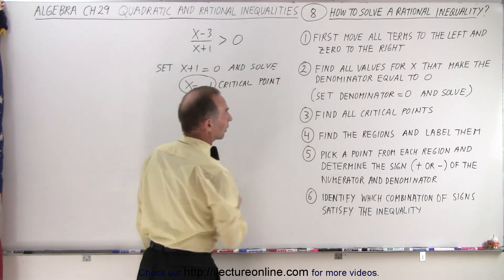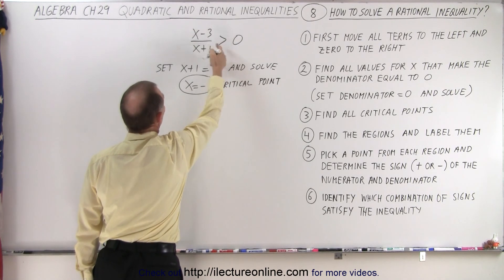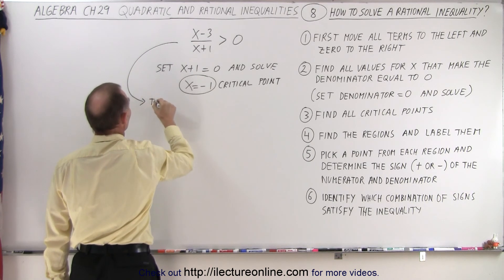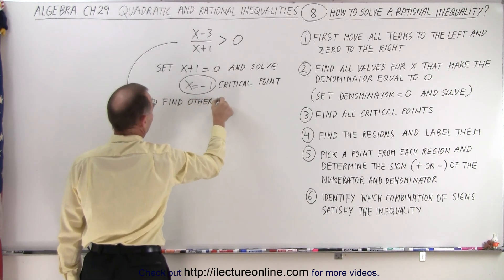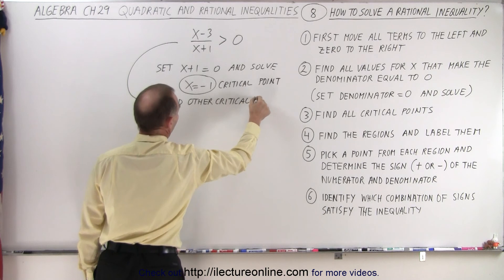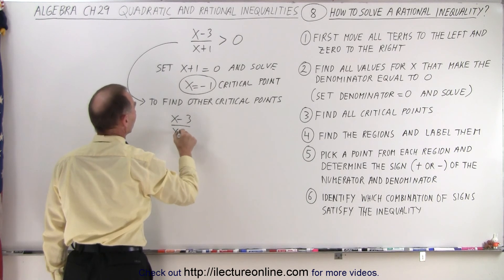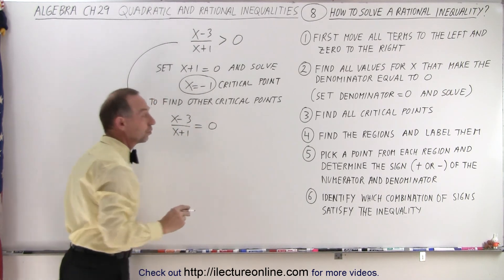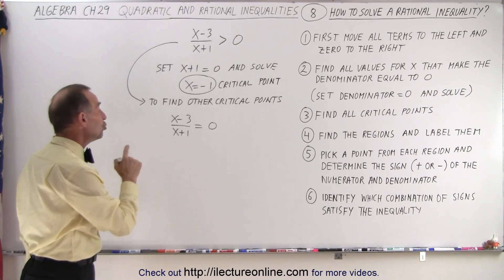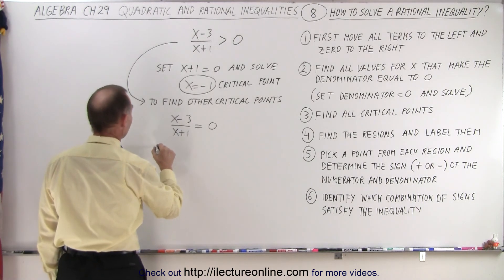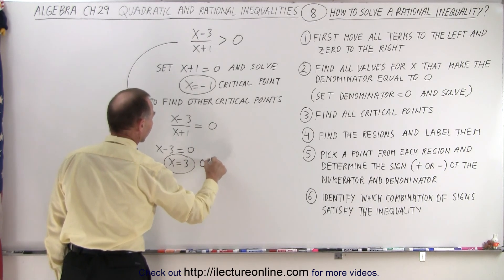Now we need to find all the other critical points. We do that by taking the inequality sign and making it into an equal sign. So to find the other critical points, we write x minus three over x plus one is equal to zero. A fraction is equal to zero if the numerator is equal to zero, so x minus three must equal zero, giving us x equals three — the other critical point.